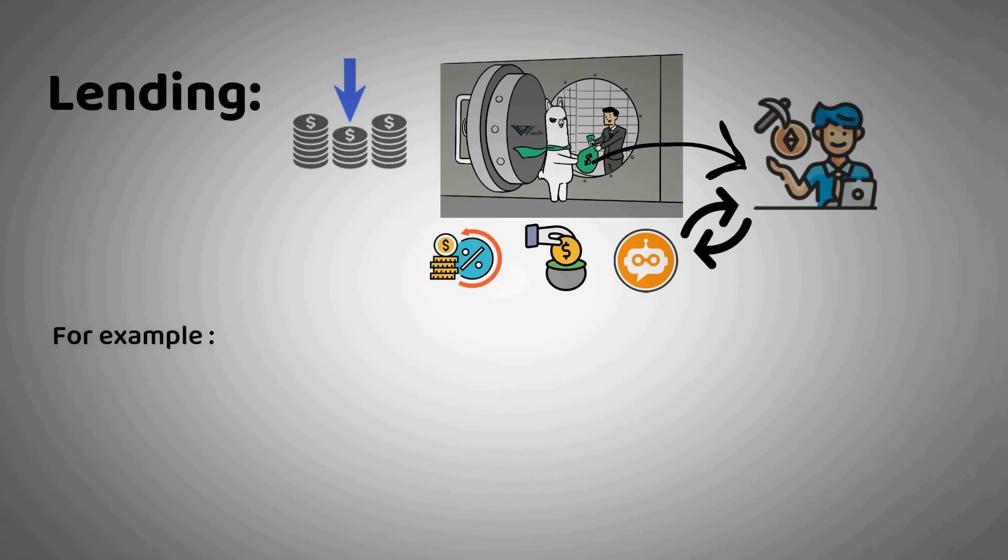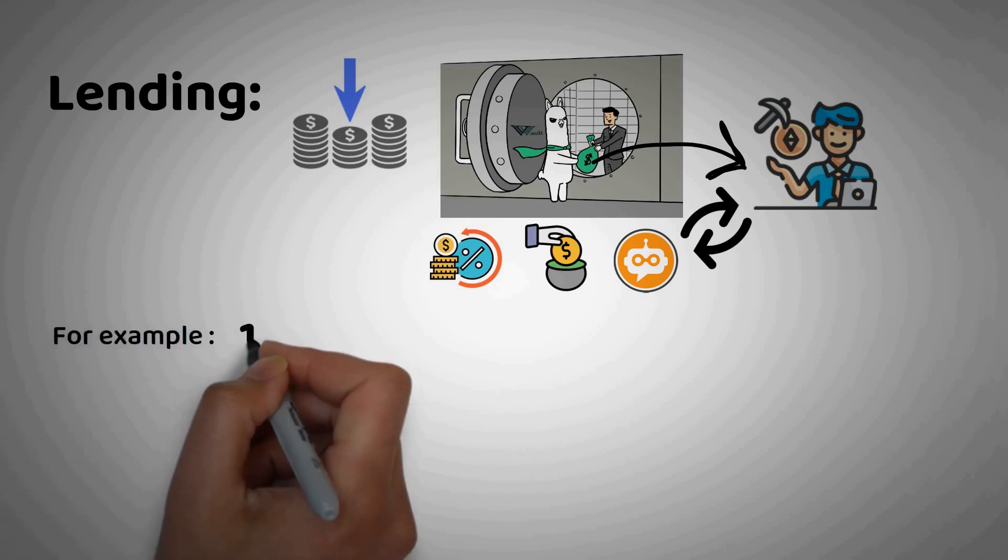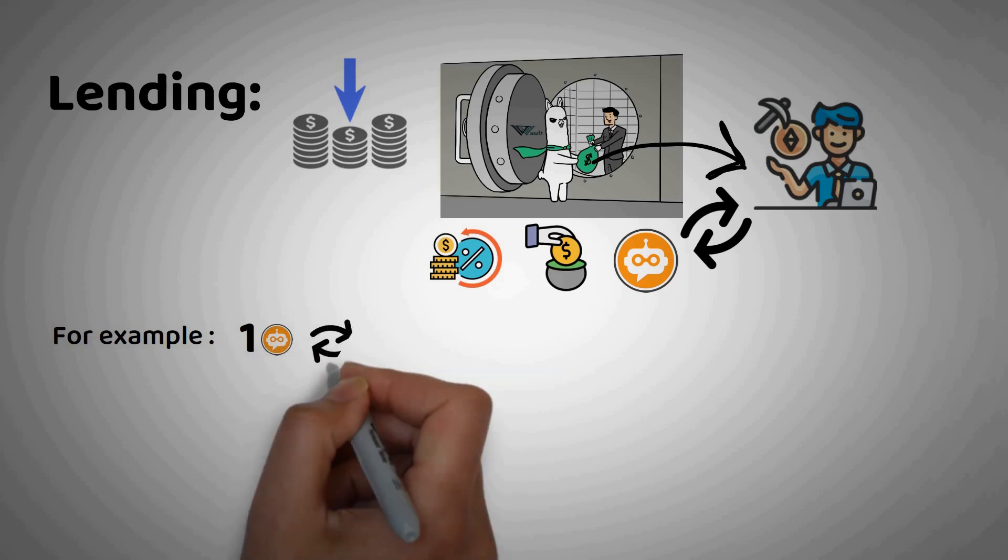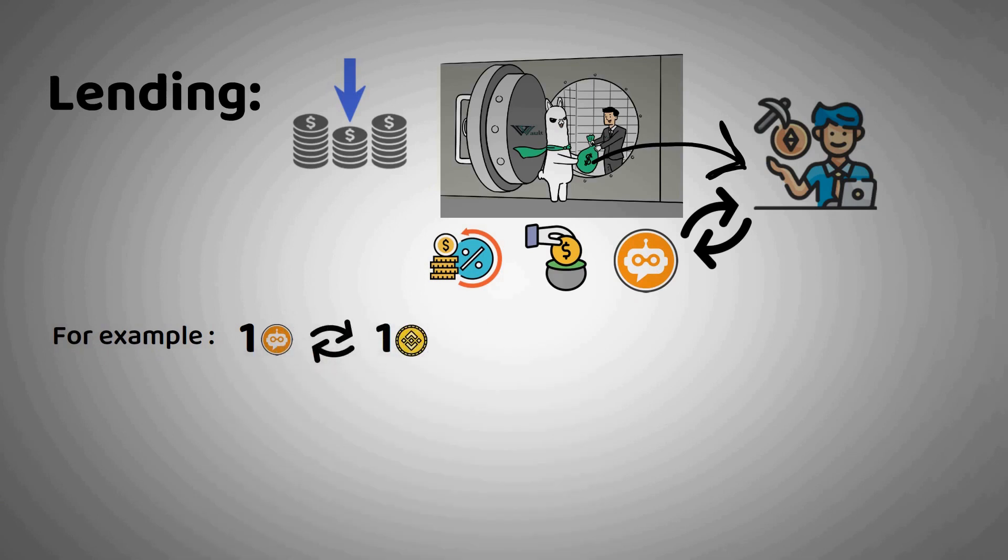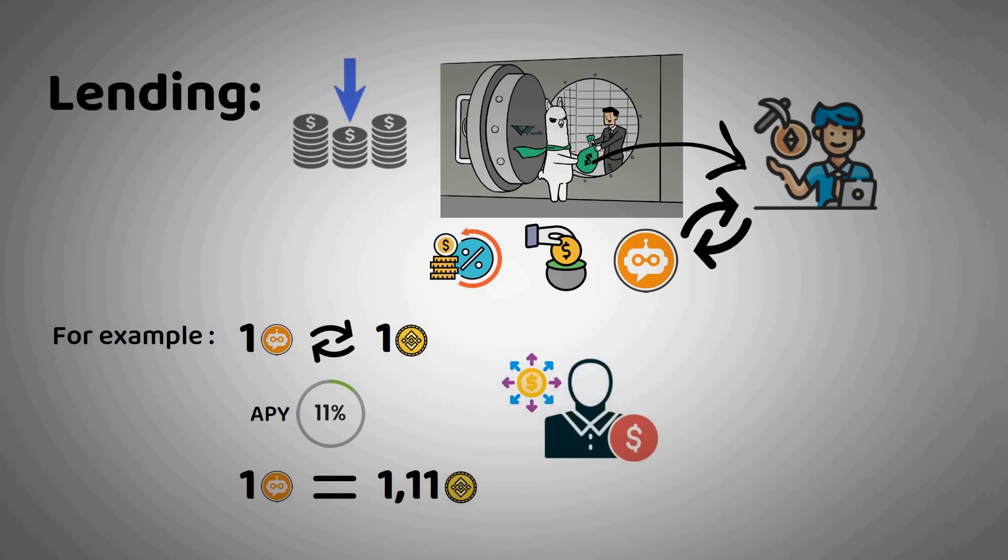For example, when Alpaca launched leveraged yield farming, 1 ibBNB could be exchanged for 1 BNB. Over the following year, the lending APY averaged 11 percent. Thus, by the end of the first year, 1 ibBNB equals 1.11 BNB. To increase yields on ibTokens, lenders can stake them to earn Alpaca rewards. If they change their mind, lenders can always unstake their ibTokens and then swap them for their respective base token, as long as there is sufficient pool liquidity.